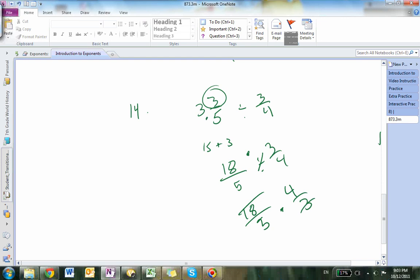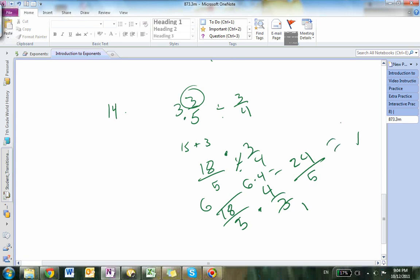3 goes into 18, 6 times. You multiply across: 6 times 4 equals 24 over 5 times 1, which is 5. 24 divided by 5 equals 4, and there's your answer.